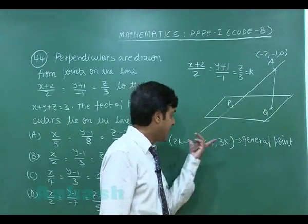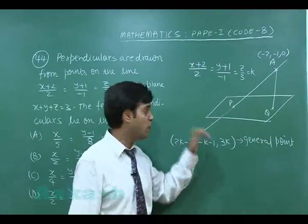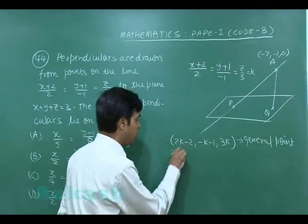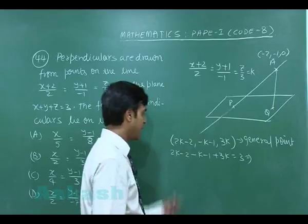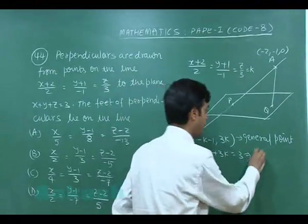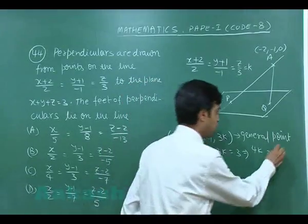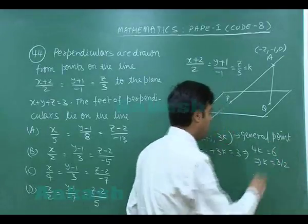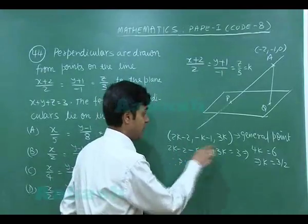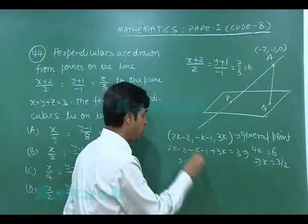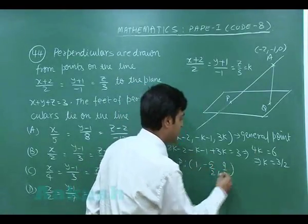Point P lies on the plane, so substituting the general point into x+y+z=3 gives: (2k−2) + (−k−1) + 3k = 3, which simplifies to 4k = 6, so k = 3/2. Putting k = 3/2 back, point P comes out as (1, −5/2, 9/2).